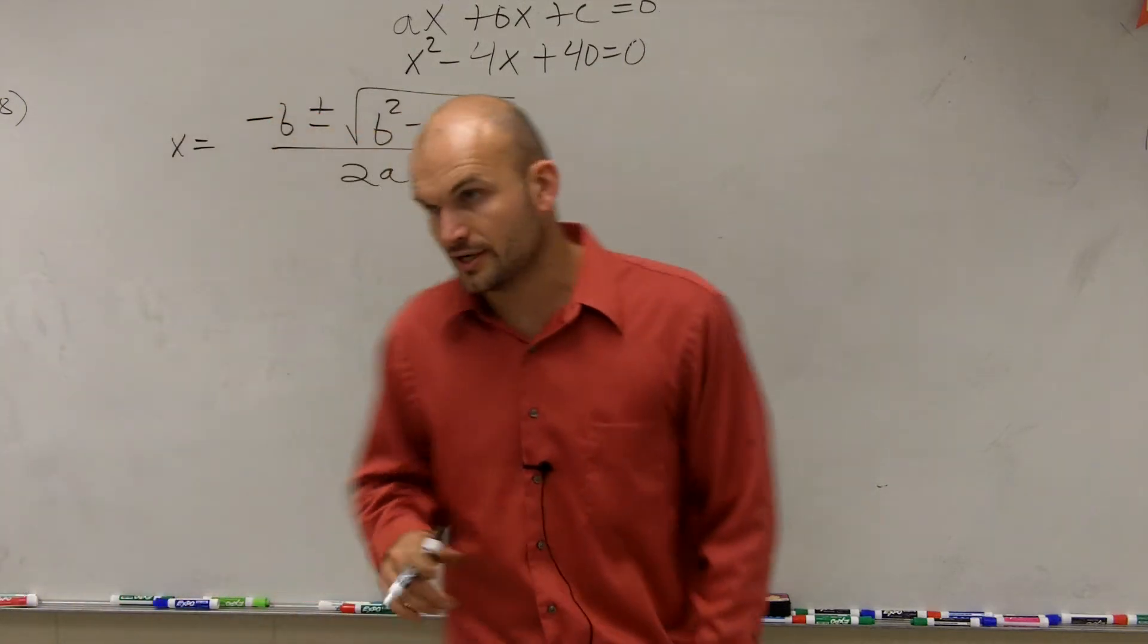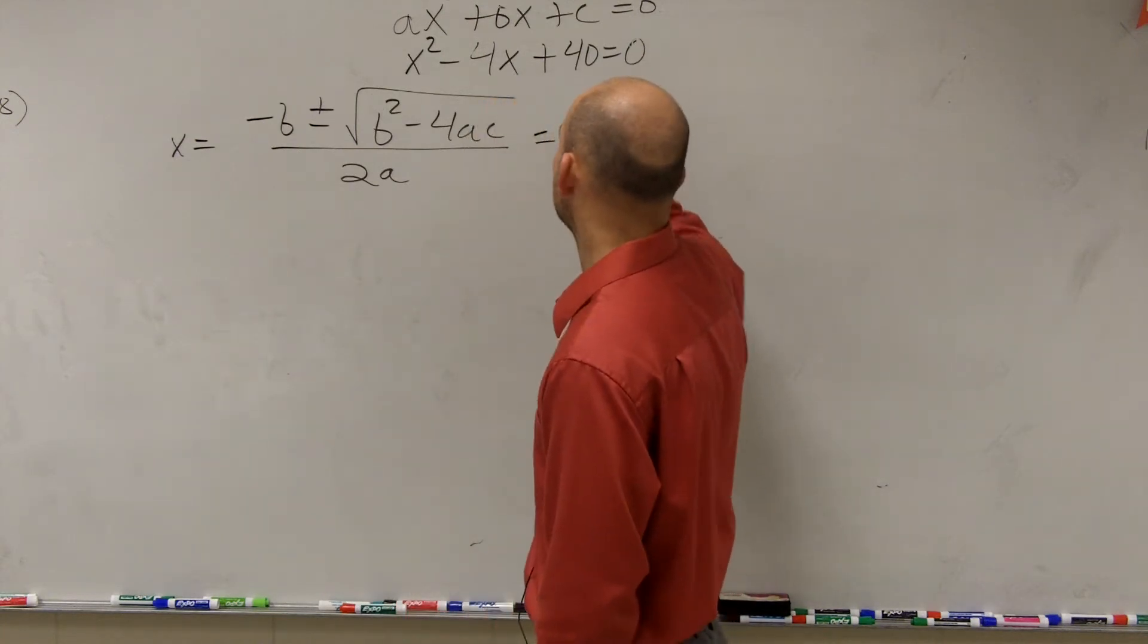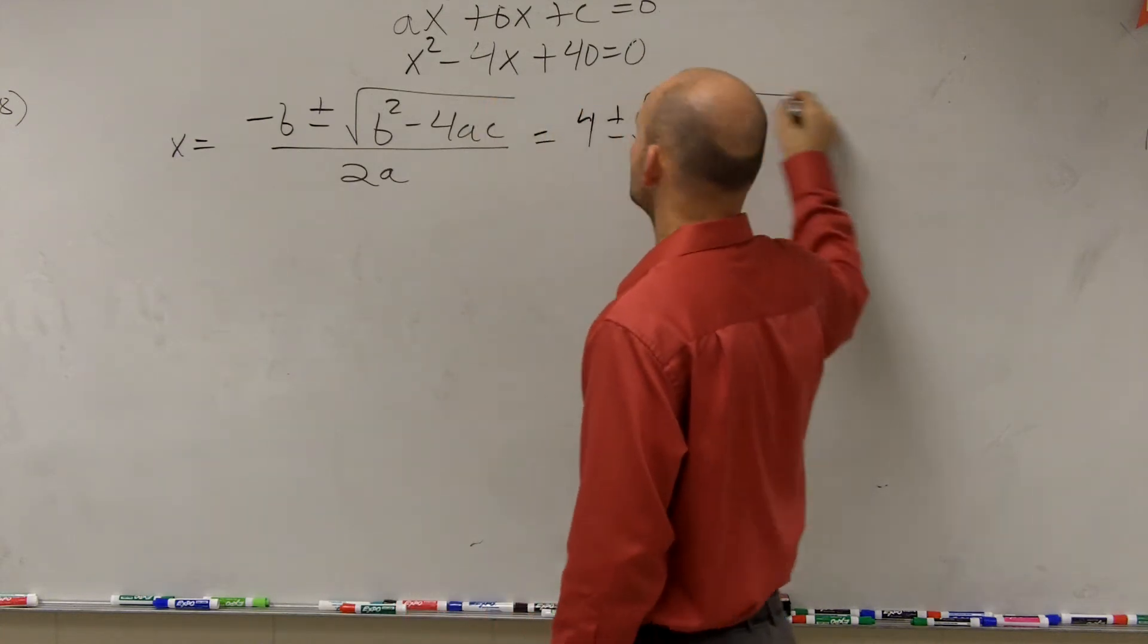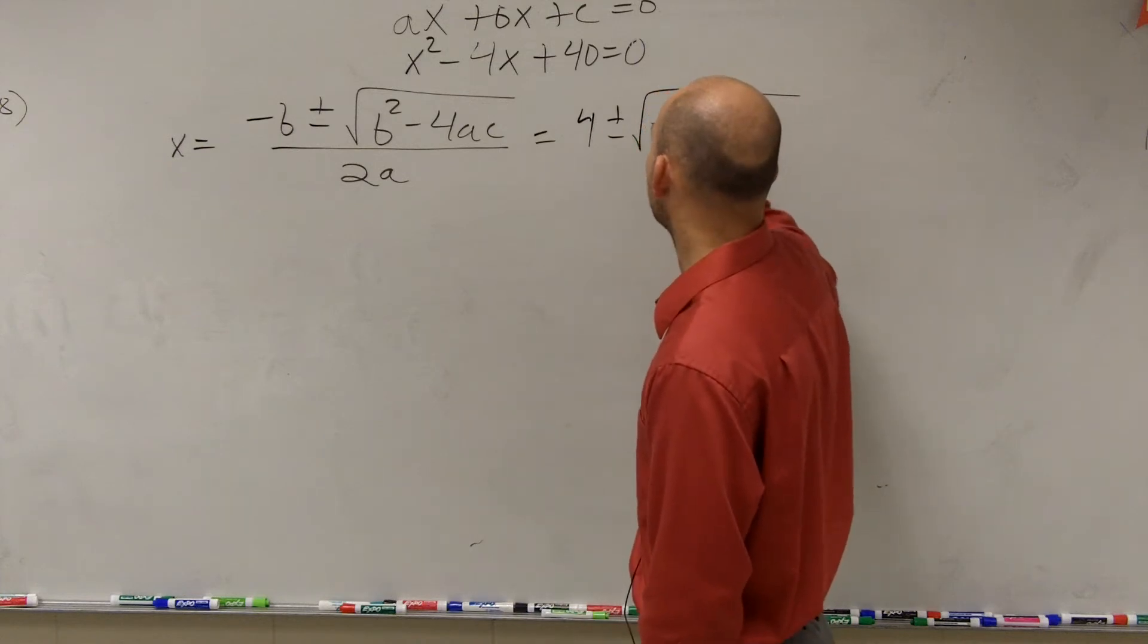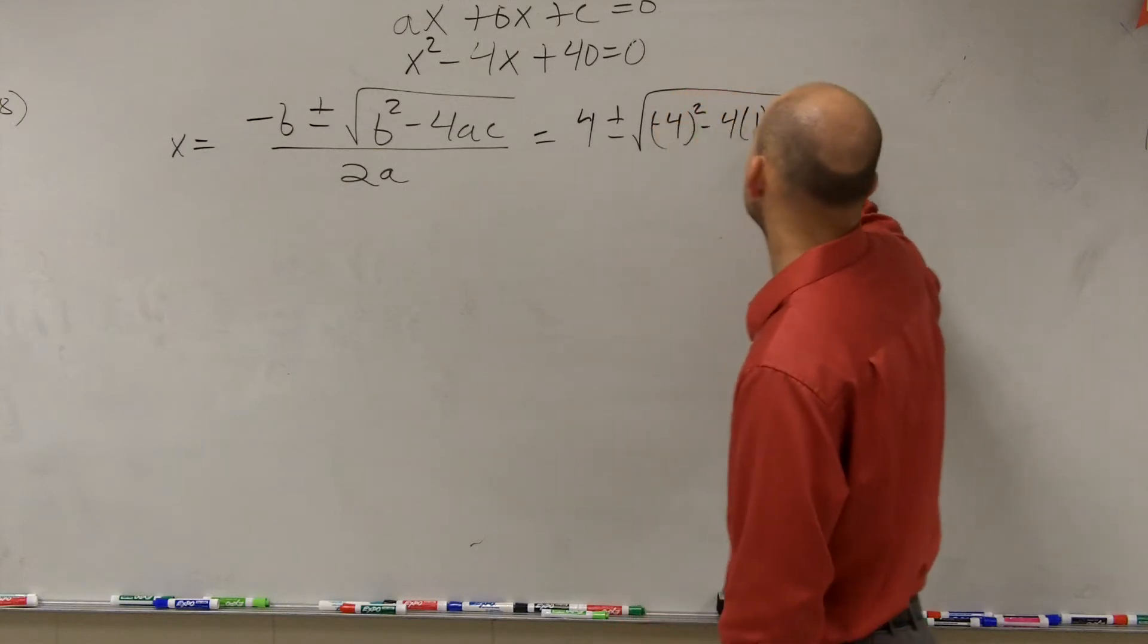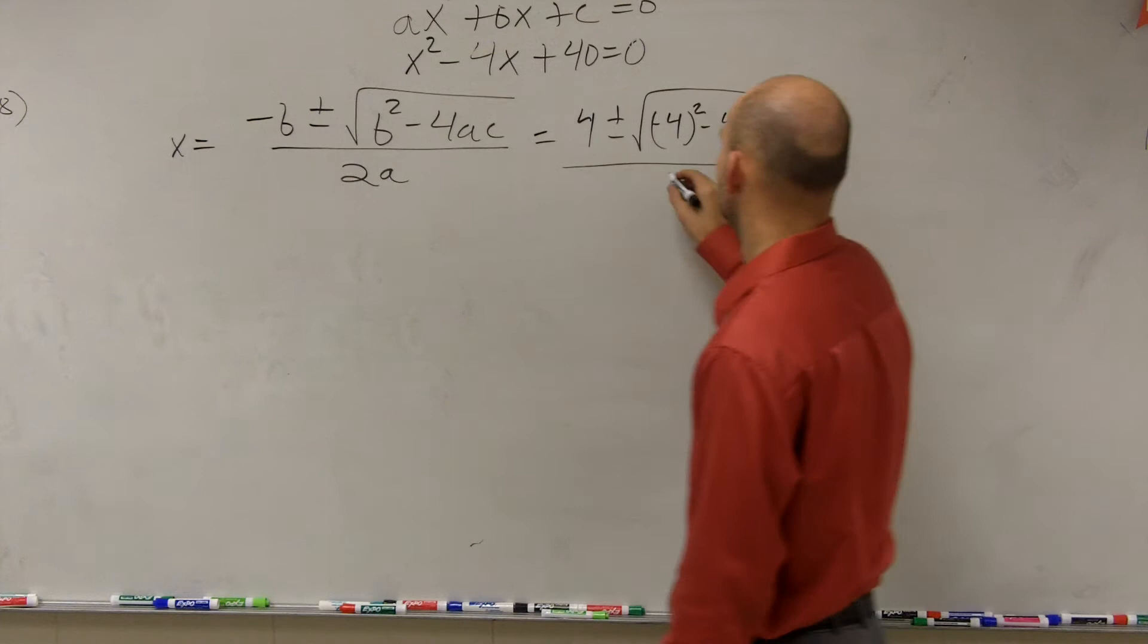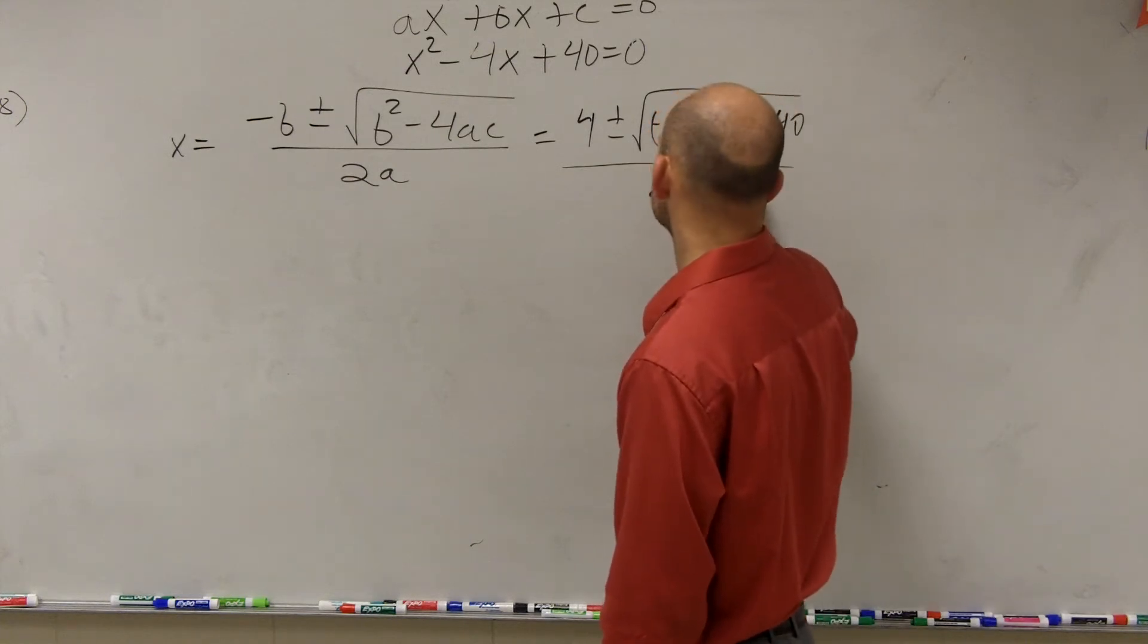So what I'm going to look over here is now let's just plug in our values. So opposite of b is going to be now positive 4, plus or minus the square root of negative 4 squared, minus 4 times a, which is 1, times c, which is 40. All divided by 2 times a, which is 1.